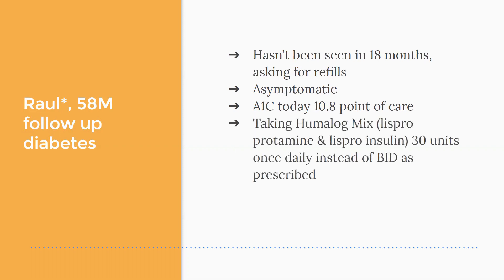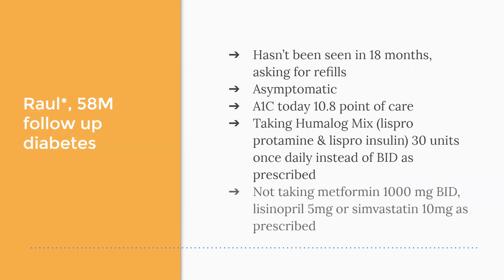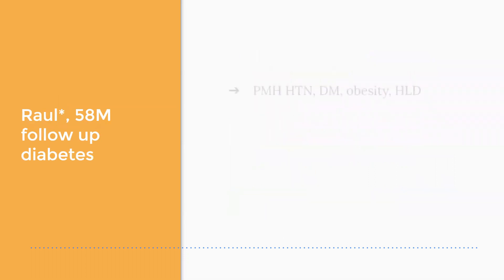He was taking Humalog Mix — Lispro Protamine and Lispro insulin — 30 units once a day instead of twice a day as prescribed. That's an intermediate-acting with a shorter-acting insulin. He was also not taking Metformin 1000 mg twice a day, neither was he taking Lisinopril 5 mg or Simvastatin 10, as had been asked of him in the past.